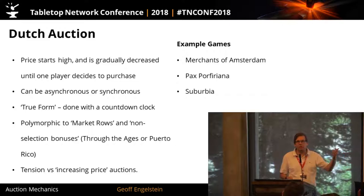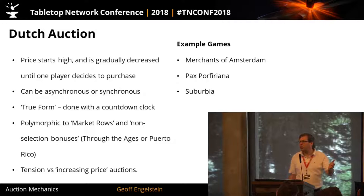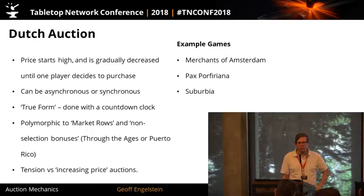The Dutch auction form does introduce a turn effect — if you decide the value of something is two, and when it hits two it's not your turn, you're stuck if someone else agrees. That's why some obfuscation is important for market mechanisms too, and usually it's done by having different things be of different value to different players. Games like Pax Porphyria, Suburbia, Through the Ages, and Small World all have this idea of things that start at a certain value and then go down.